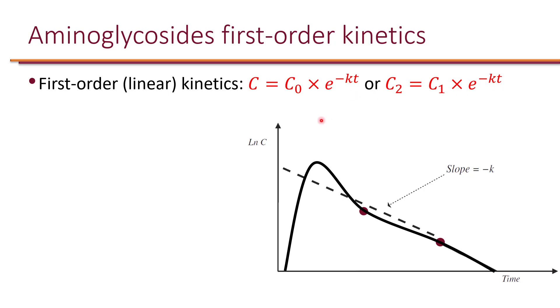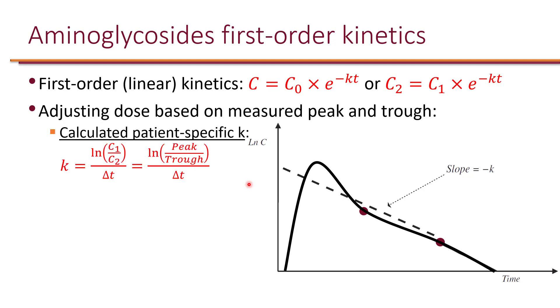You can adjust the dose based on the measured peak and trough or the two levels that you have by calculating a patient-specific k. The way that you calculate the patient-specific k is by rearranging that equation to solve for k.